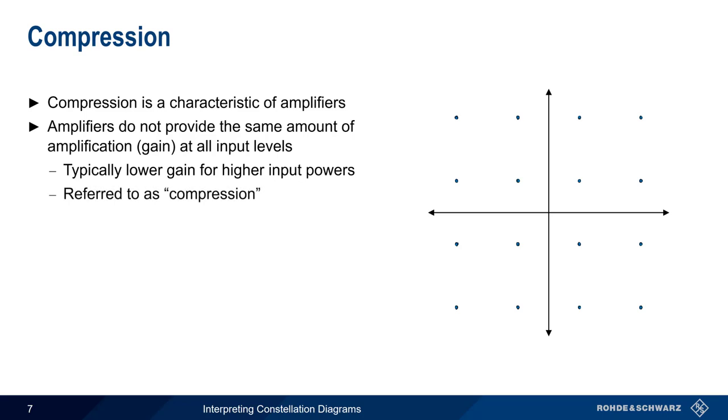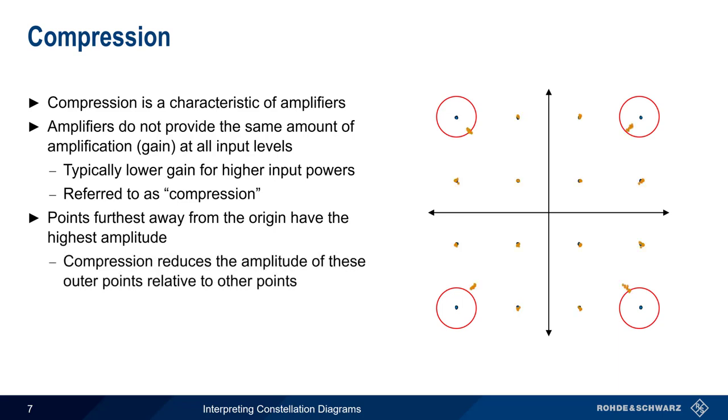In constellation diagrams, single amplitude or magnitude is distance from the origin, so the further a point is from the origin, the higher its amplitude. If the amplifier goes into compression, these outer points are amplified less than the inner points, causing these points to be pulled in towards the origin.